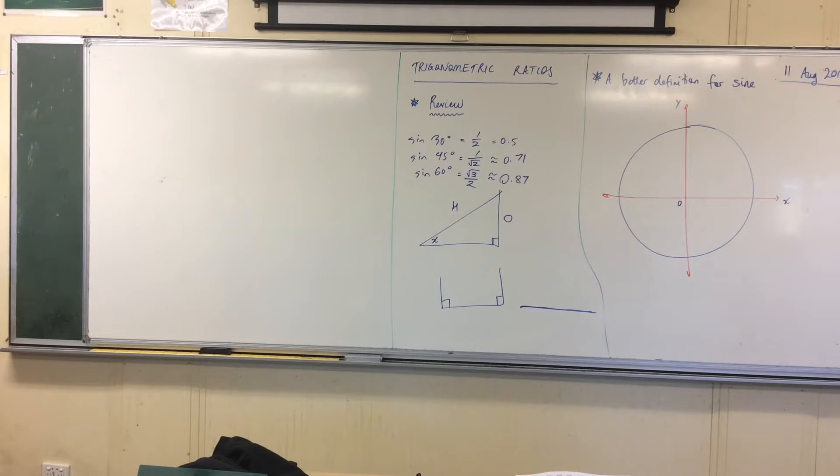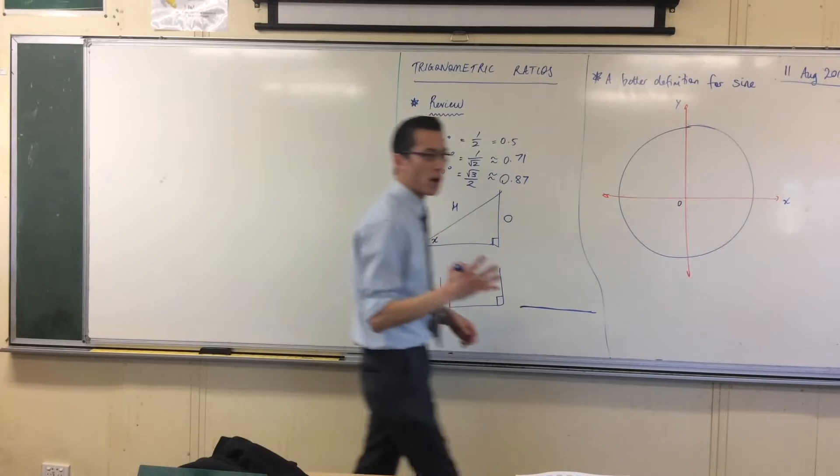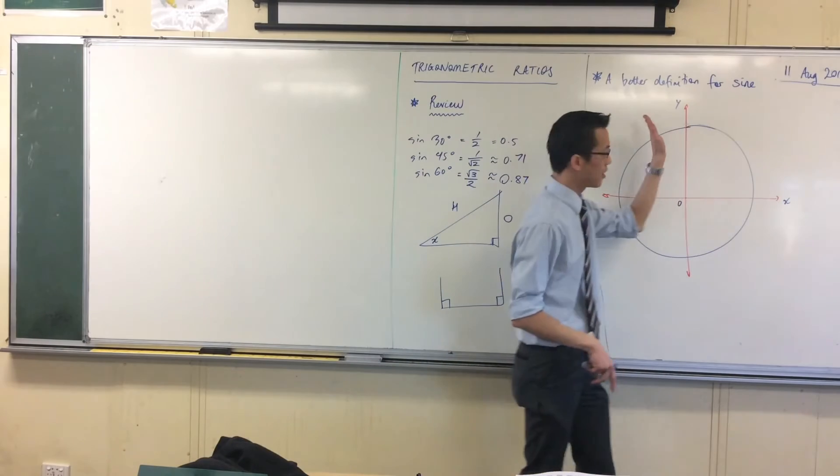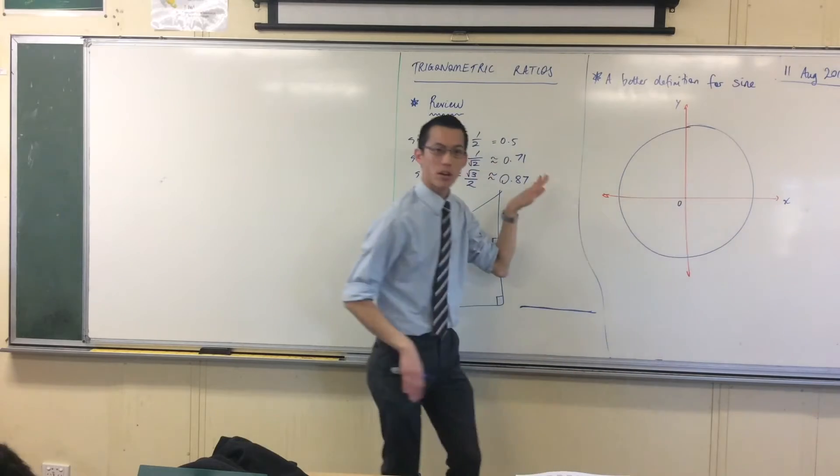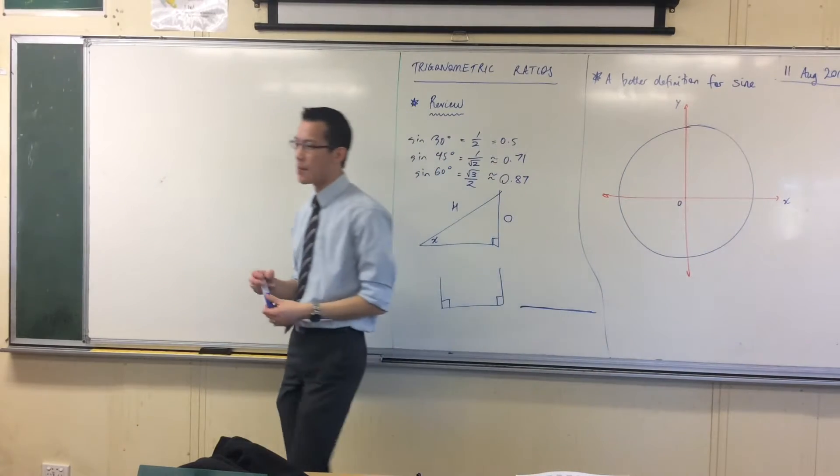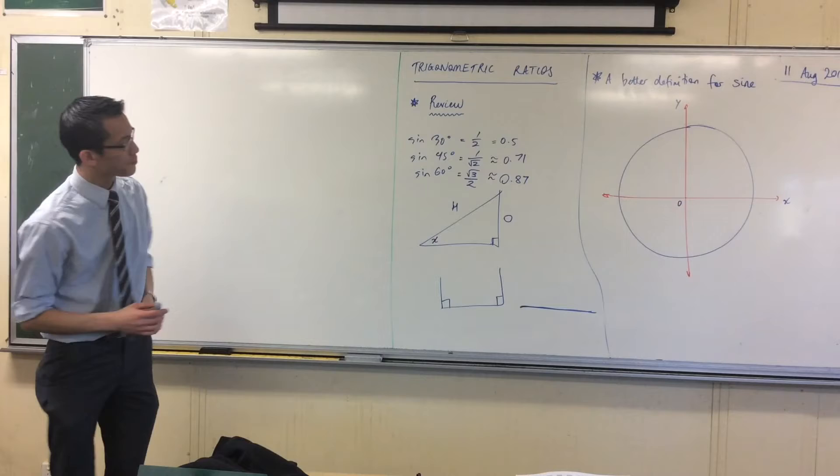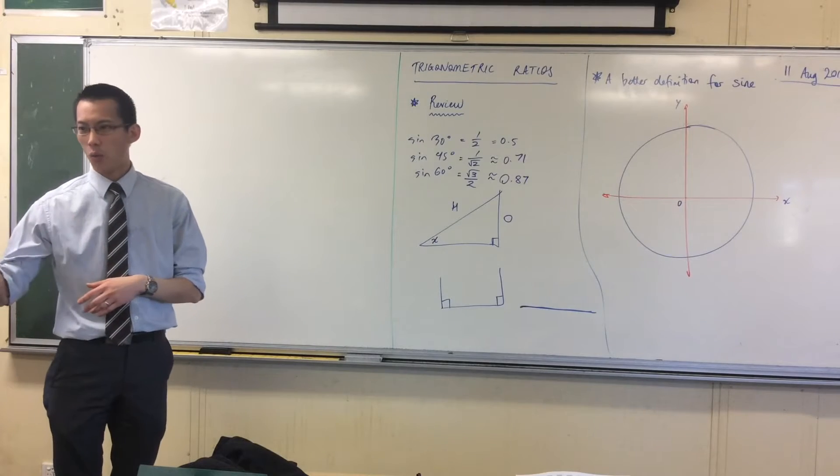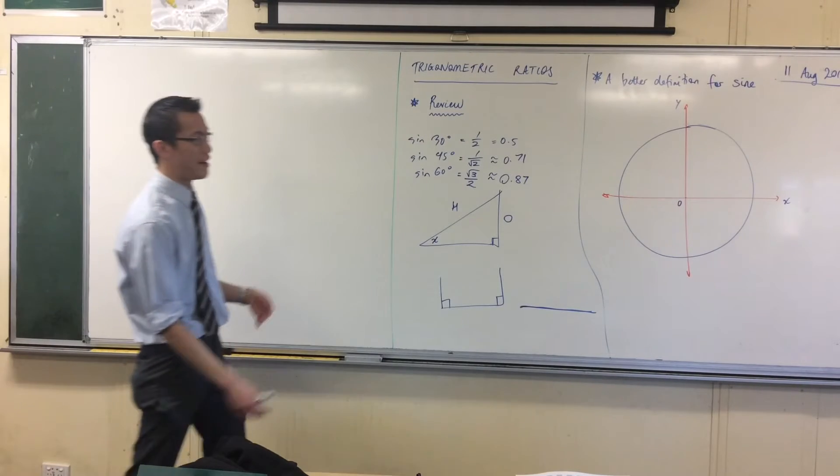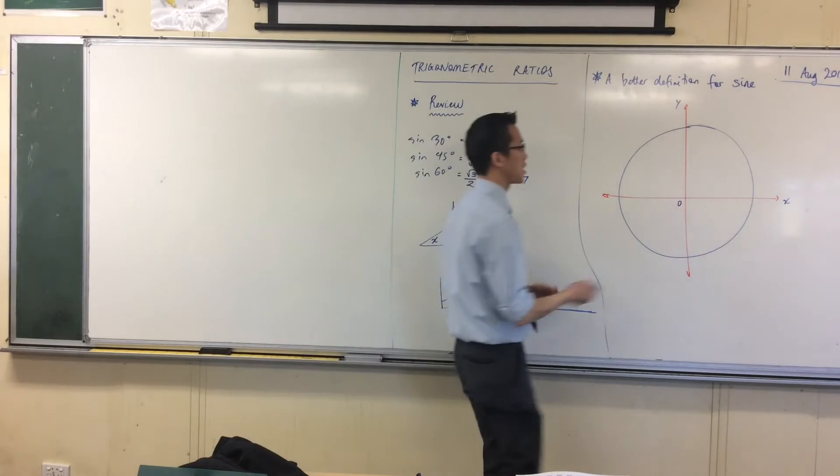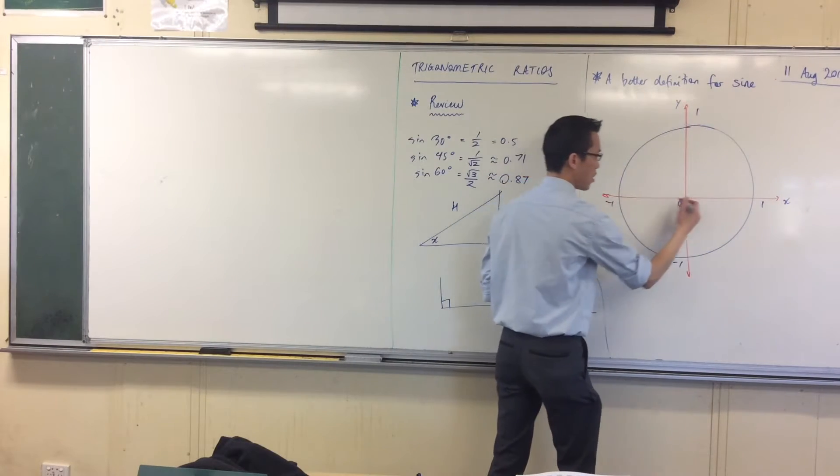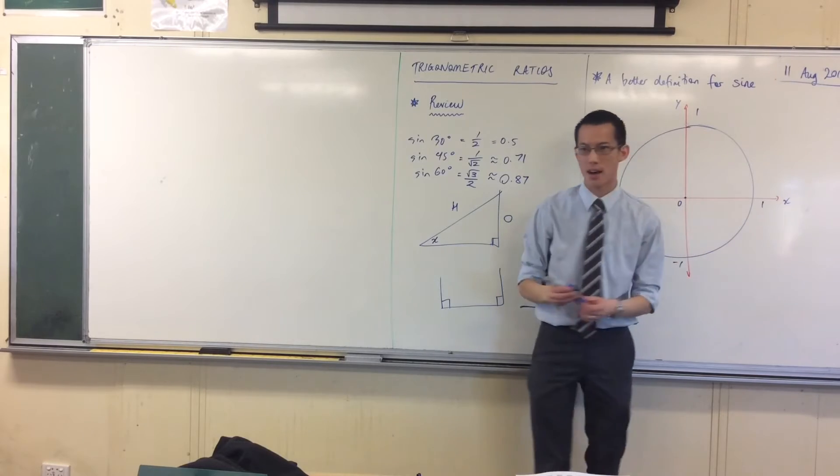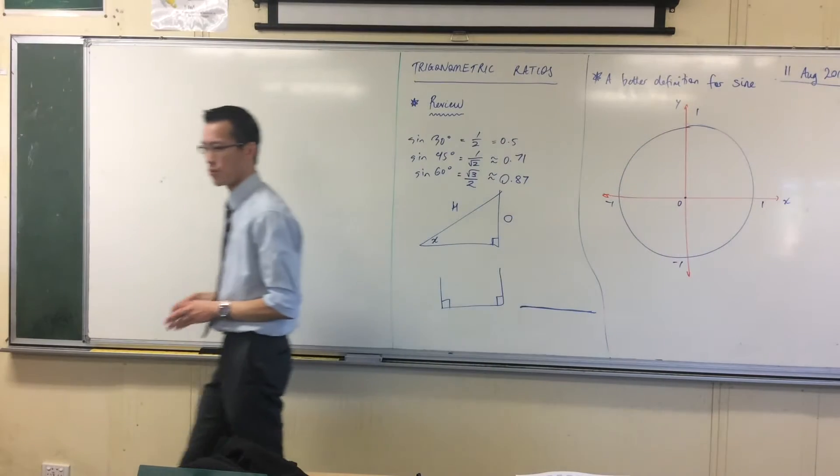You'll see that your circle intersects the axes at four spots. One on the positive y, one on the negative y, one on the positive x, one on the negative x. We're going to label each of those as 1 if it's on the positive side, or negative 1 if it's on the negative side. So we've got 1, 1, negative 1, negative 1, and there's the center at the origin, 0, 0.